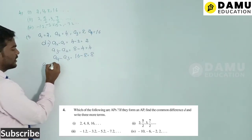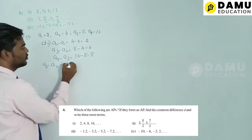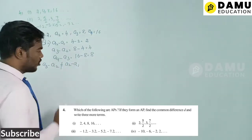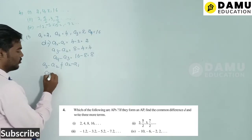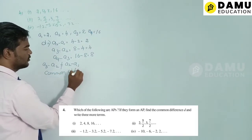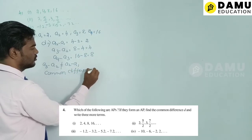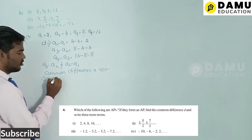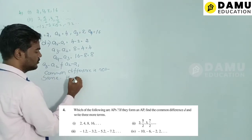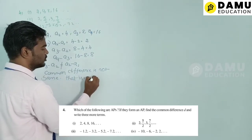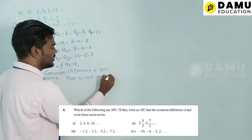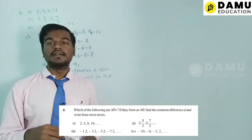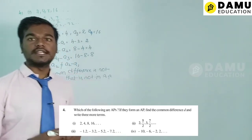Since a3 − a2 ≠ a2 − a1, the common difference is not the same. Therefore this series is not in arithmetic progression. We cannot write the next three terms using AP formulas.